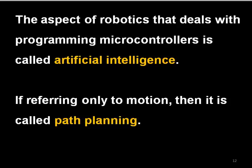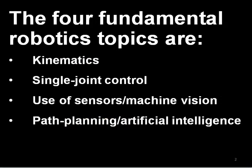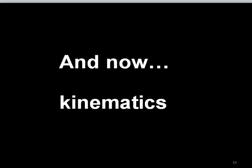We will look at both path planning and more complex artificial intelligence in this class. In this class, we will be looking at all four of the fundamental robotics topics: kinematics, single joint control, the use of sensors and machine vision, and path planning and artificial intelligence. We are going to start today and for the first month or so of class looking specifically at kinematics. In the next video, I will be introducing you to some robotics terminology, specifically that terminology that is related to the robot's links and joints.